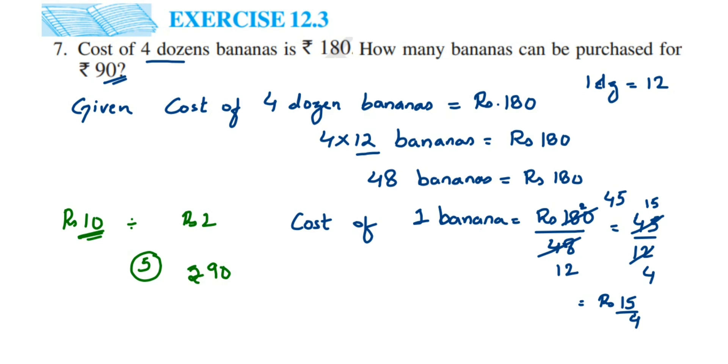Same way, we have 90 rupees here. In this 90 rupees, how many bananas I can purchase? I know cost of one banana is 15 by 4. So this 90 I should divide by 15 by 4, that's it, I'll get the answer. 15 by 4 is a fraction.